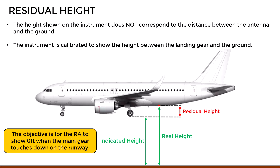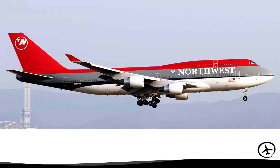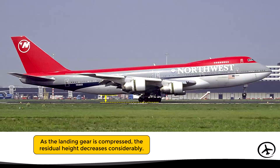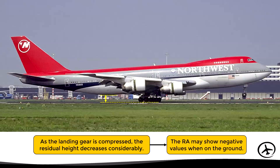There are some aircraft that may have different residual heights depending on the design of the landing gear. For example, the Boeing 747. In this case, the main landing gear is tilted during the approach, giving a relatively higher residual height. However, when the plane lands, the main landing gear is compressed, causing the residual height to decrease considerably. Therefore, since the radio altimeter is calibrated with the residual height of the approach, it may show negative values when on the ground.